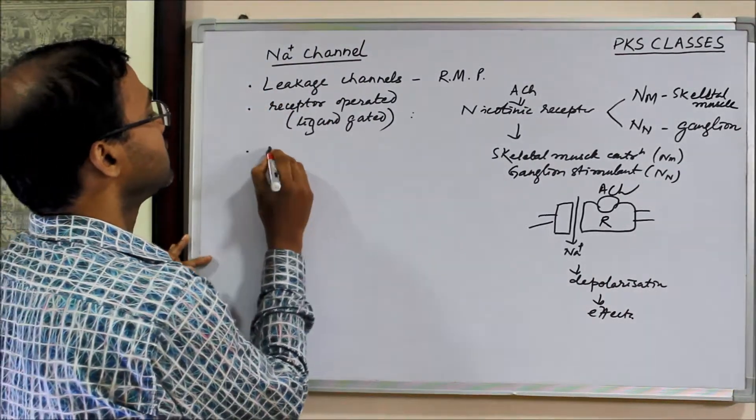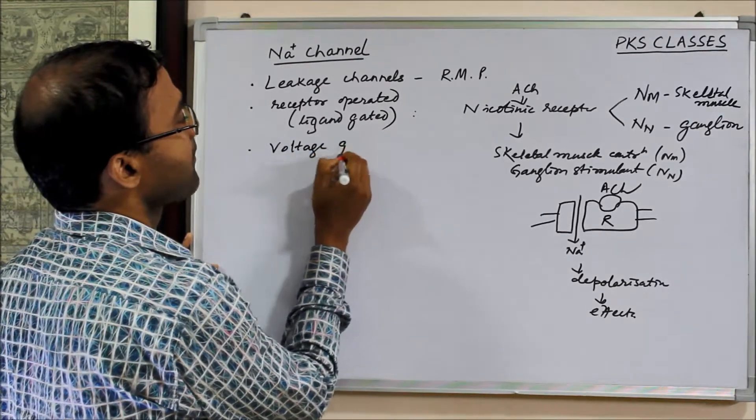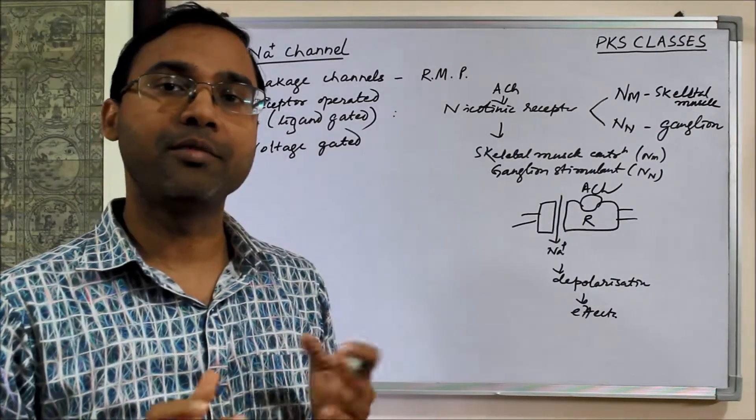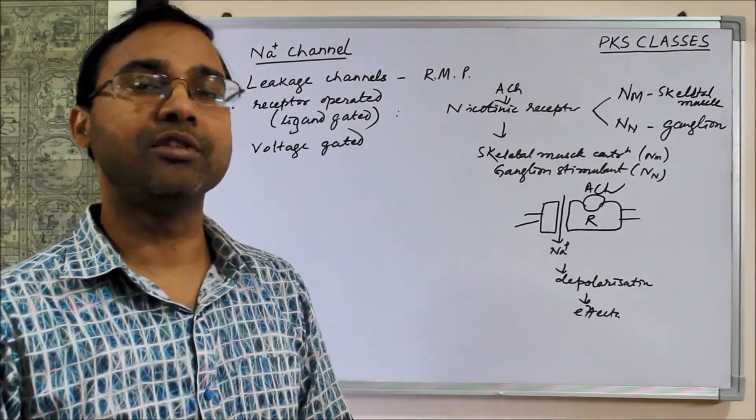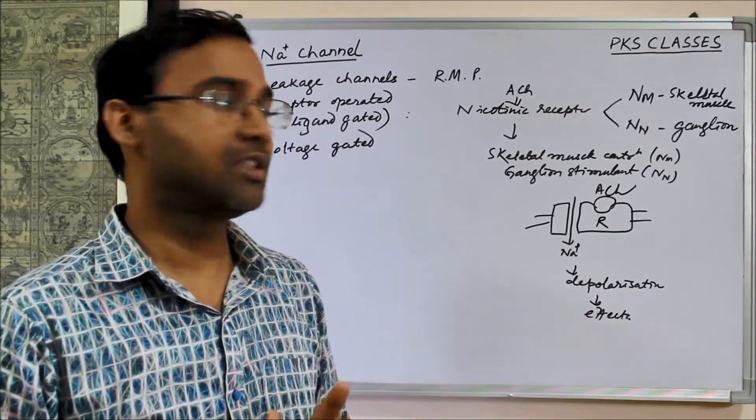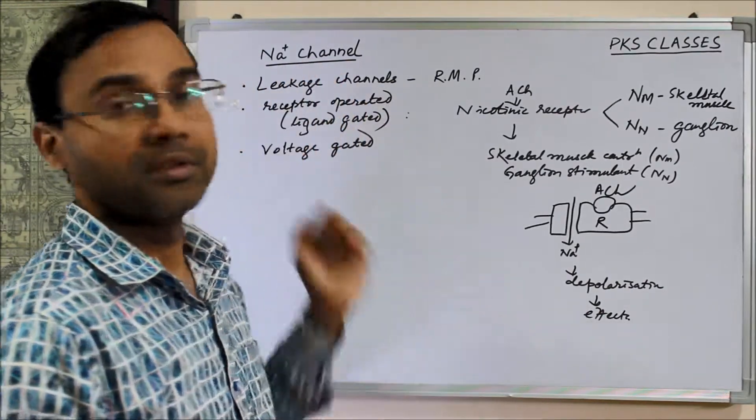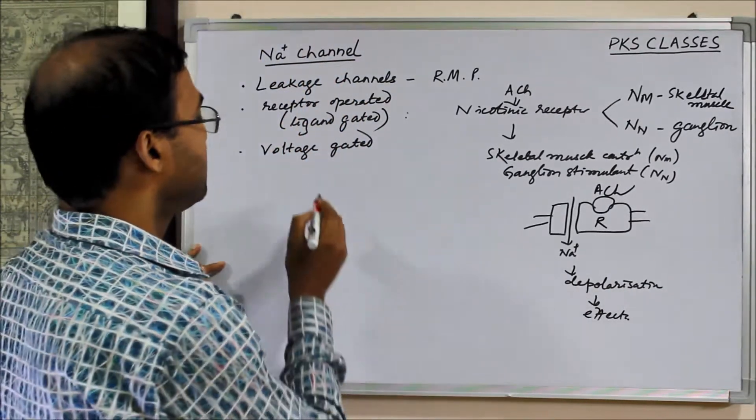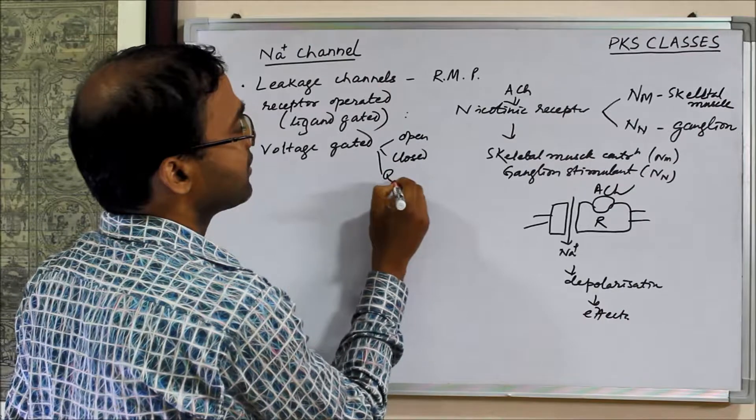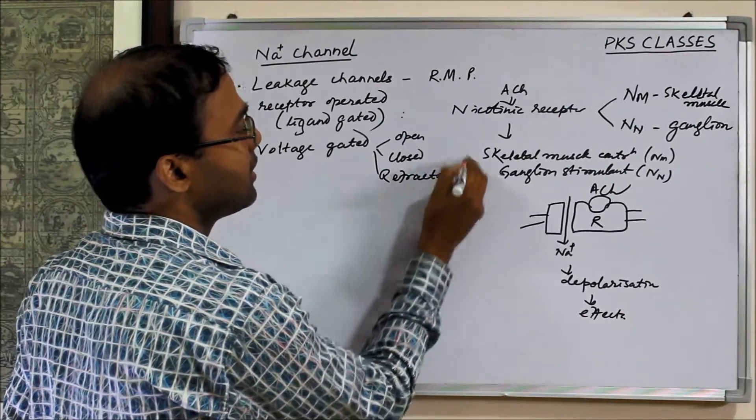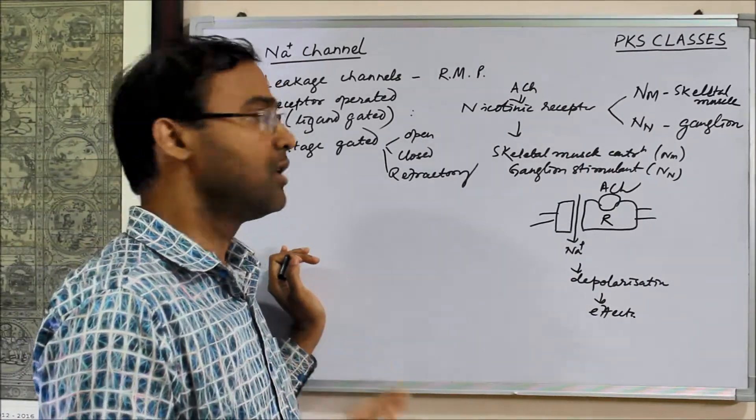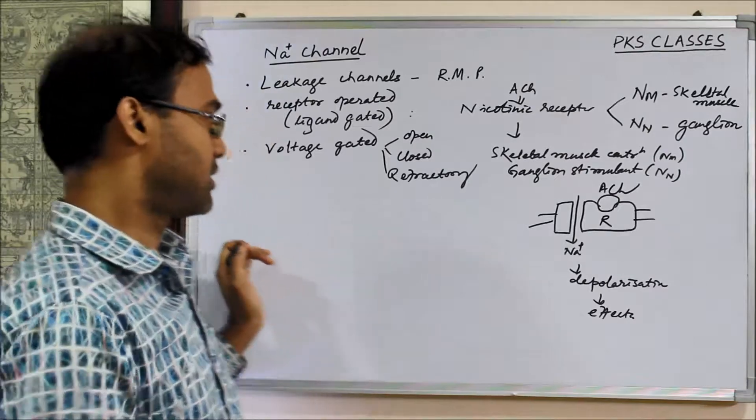And the third one is the voltage gated. Voltage gated means it depends on the membrane potential. Membrane potential change will lead to change in the conformation of the ion channel whether it opens or closes. And in sodium we have three functional states: open, closed, and refractory. The sodium channel only opens when it is in closed state, not in refractory state.